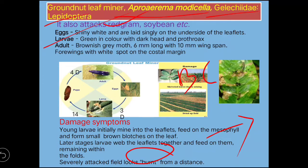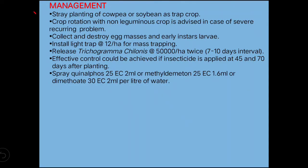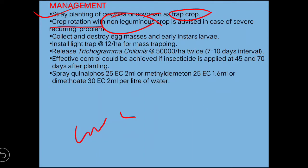For management of groundnut leaf miner, use cowpea and soybean as trap crops, or do crop rotation with non-leguminous crops. Collect egg masses and early instar larvae and destroy them. Install light traps at 12 per hectare. Release Trichogramma chilonis at 50,000 per hectare, and spray quinolphos, methyl demeton, or dimethoate at 2 ml per liter of water.